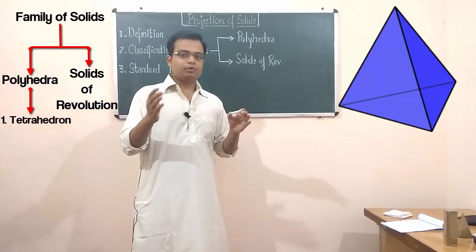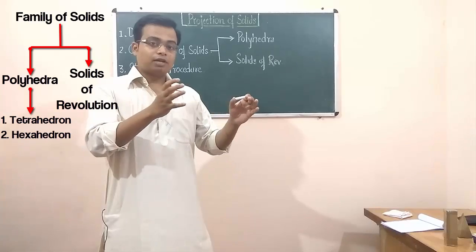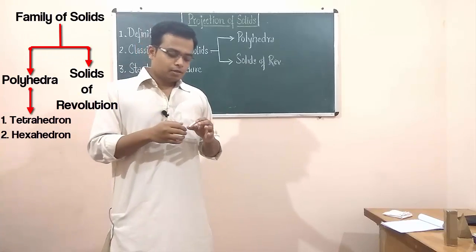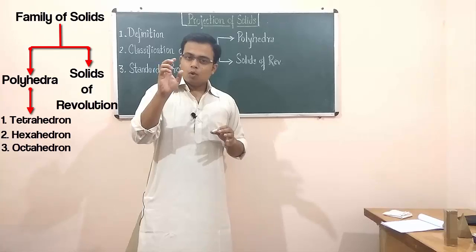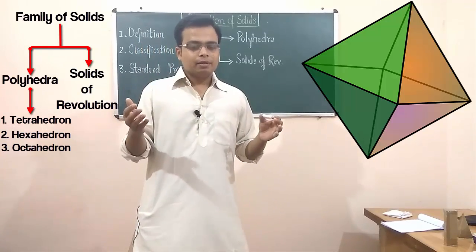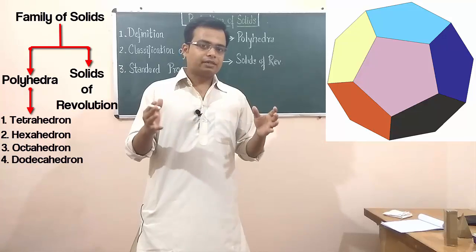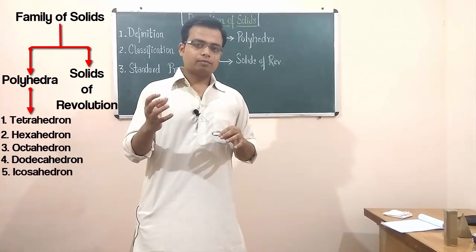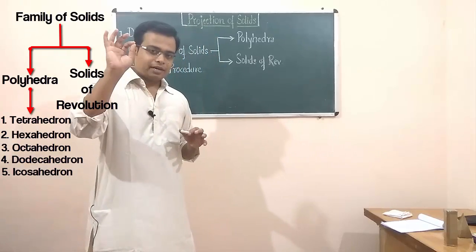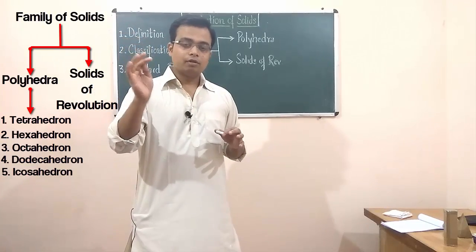A tetrahedron has four faces, all equilateral triangles. Next is the hexahedron, popularly known as a cube, which has six equal square faces. Then there is the octahedron with eight equilateral triangular faces, followed by the dodecahedron with 12 regular pentagonal faces, and finally the icosahedron with 20 equilateral triangular faces.